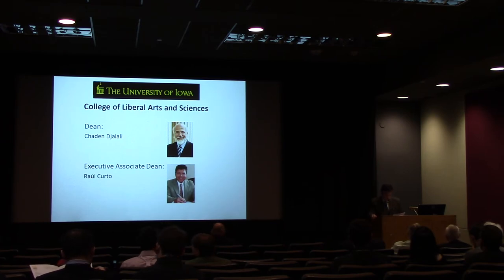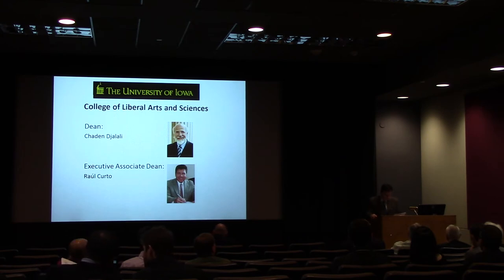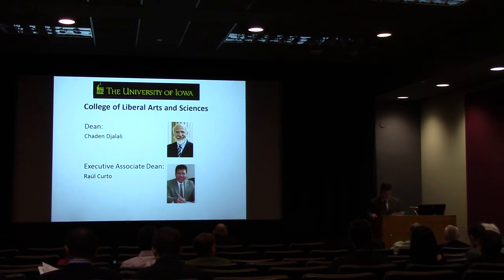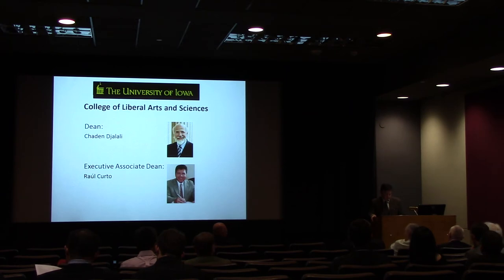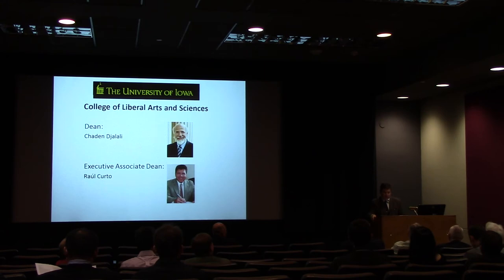We then thought about the abstract problem: how can someone win a three-set match while losing the maximum percentage of points? One can create scenarios so that each game lost is lost at love and each game won is won by the minimum margin of two points. The set lost is lost six to zero, with each game lost at love. The two sets won are won in a tie-break, with each game won by the minimum difference of two points and each lost game lost at love. When you win a game, you do it in the closest possible way; when you lose a game, you do it as badly as possible. When you do the math, the minimum percentage of points won is a mere 36.9%. So it is actually possible to win a tennis match by winning about 37% of the points.